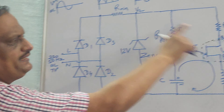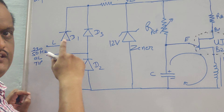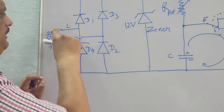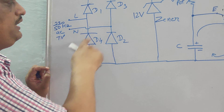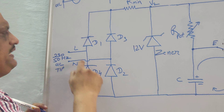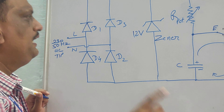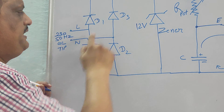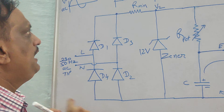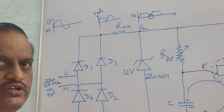Let us see how this triggering circuit works. In this triggering circuit, we have a bridge rectifier. This bridge rectifier will convert the input AC voltage into DC voltage. Diode D1 and D2 will conduct in the positive half cycle, and diode D3 and D4 will conduct in the negative half cycle, and we will get such a rectified output over here.